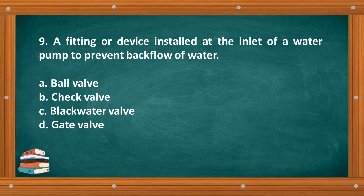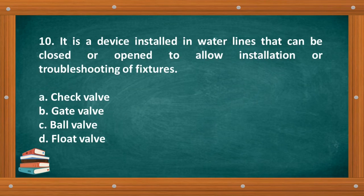The correct answer is letter B, Check valve. Question number 10: It is a device installed in water lines that can be closed or opened to allow installation or troubleshooting of fixtures. A. Check valve, B. Gate valve, C. Ball valve, D. Float valve.